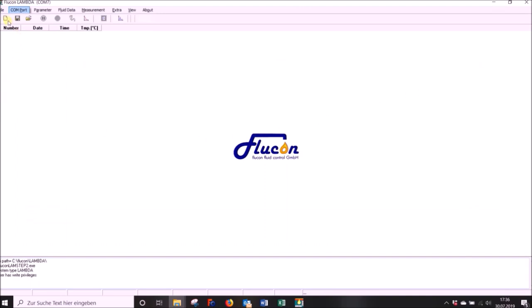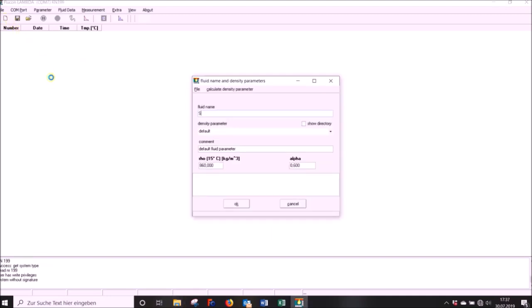This is what the program window looks like. Start a measurement by clicking on File or on the empty sheet symbol. Now the fluid data form will be displayed and will ask you for further information on your sample. First, fill in a fluid name.